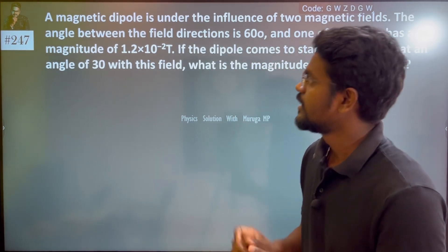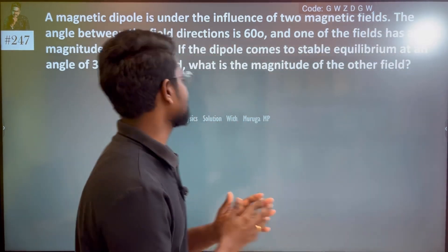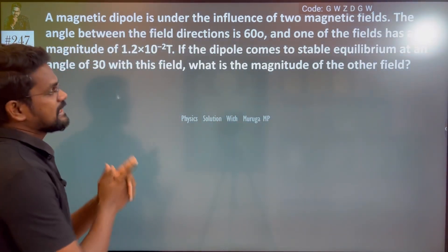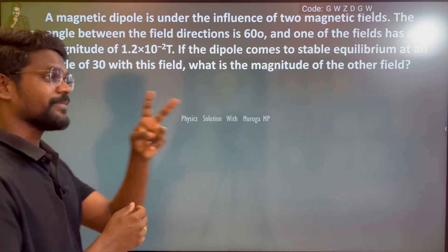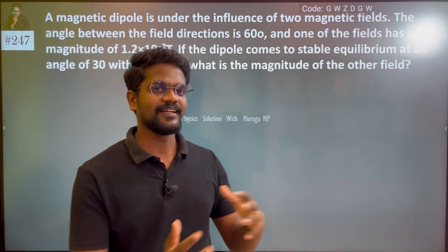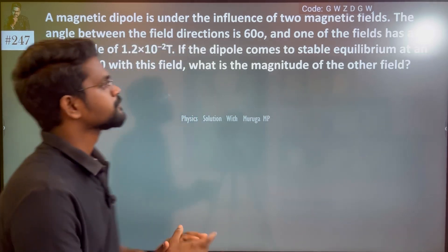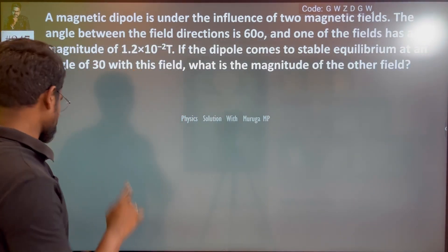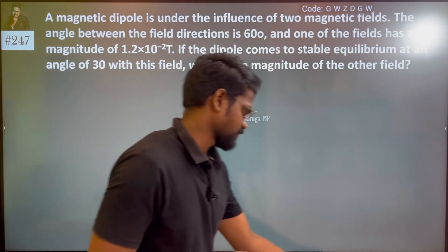The question states: a magnetic dipole is under the influence of two magnetic fields. So one dipole is in the presence of two magnetic fields. The angle between the field directions is 60 degrees.